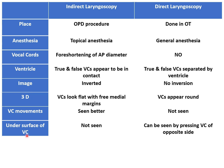The undersurface of the vocal cord cannot be seen or examined with indirect laryngeal examination. But during direct laryngeal examination, by pressing the vocal cord of the opposite side, the undersurface of the vocal cords can be seen.